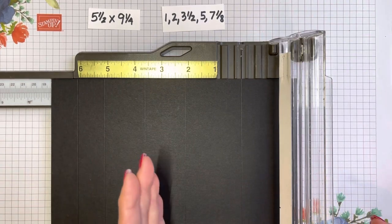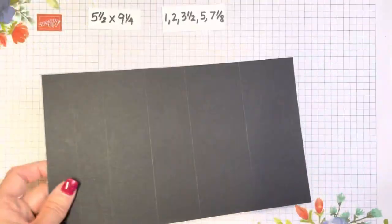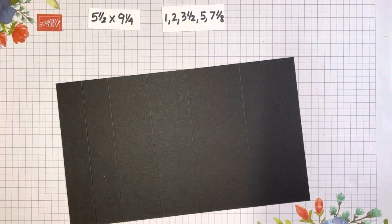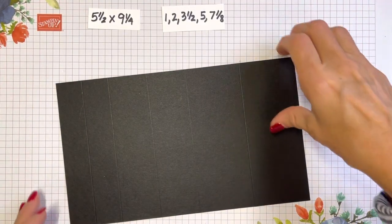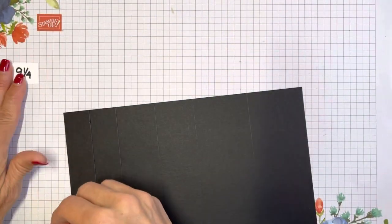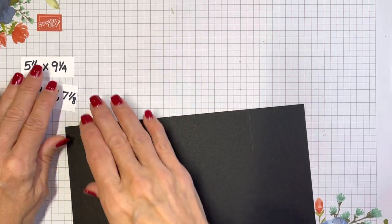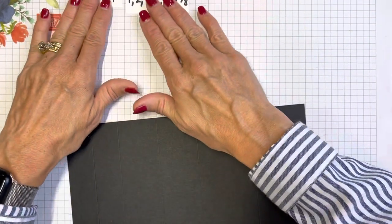At 3½, trying not to shake the table and get you guys all dizzy. We're going to go to 5. Then 7⅛, two of the smallest marks on there. 7⅛. 1, 2, 3½, 5, 7⅛. That is our card base.